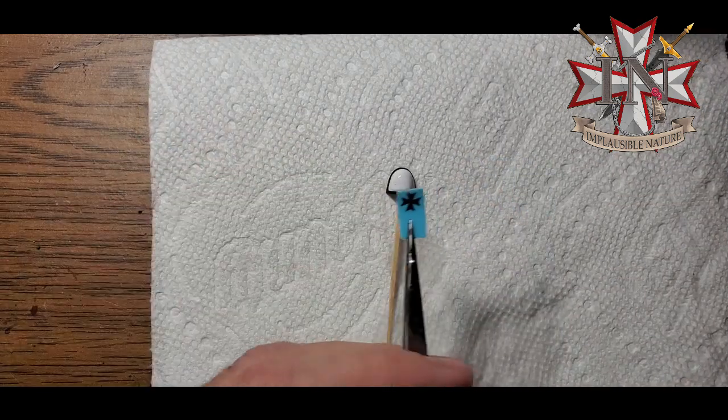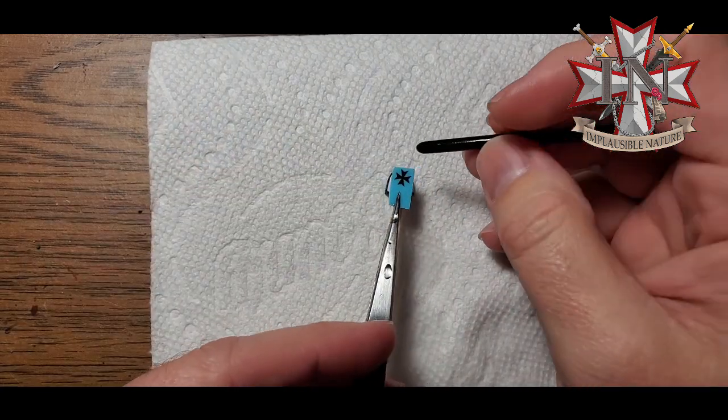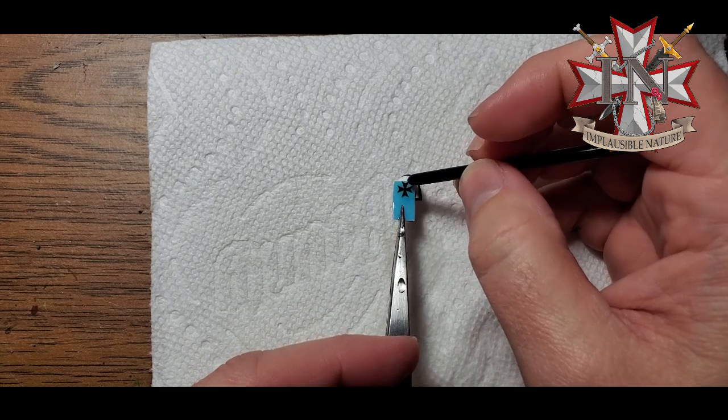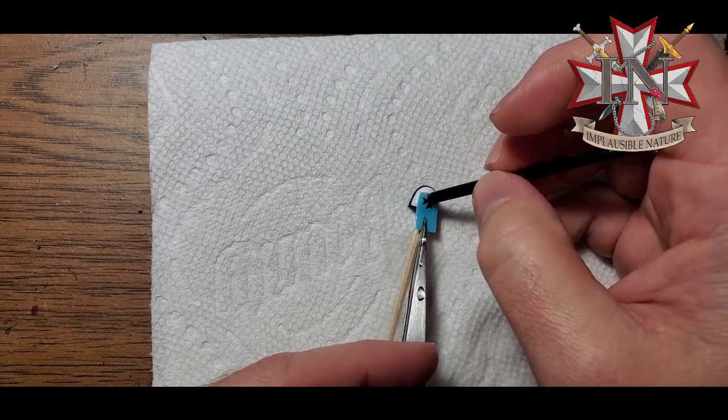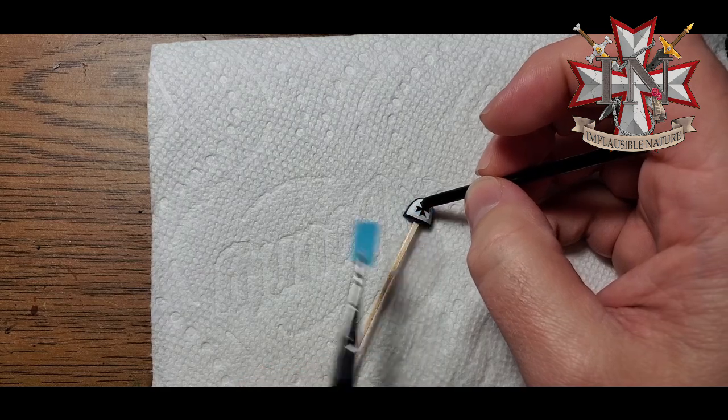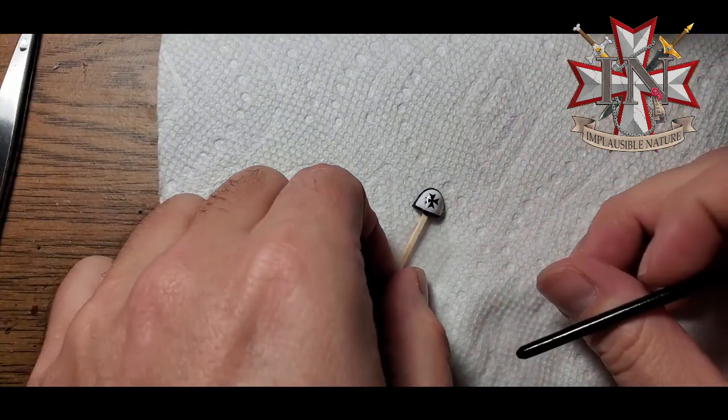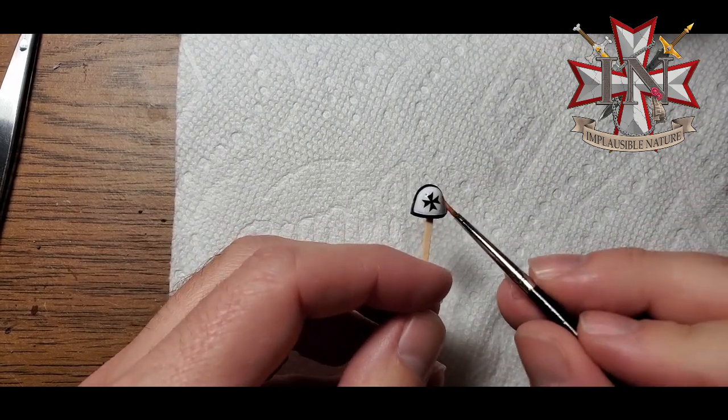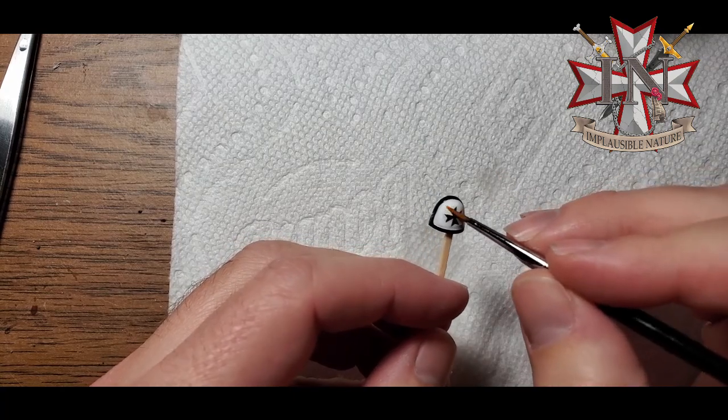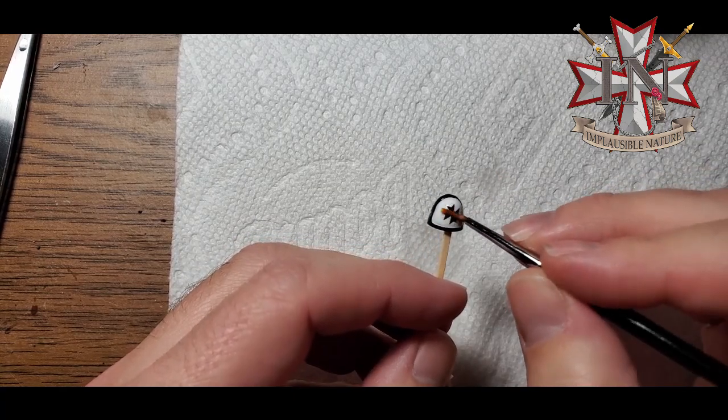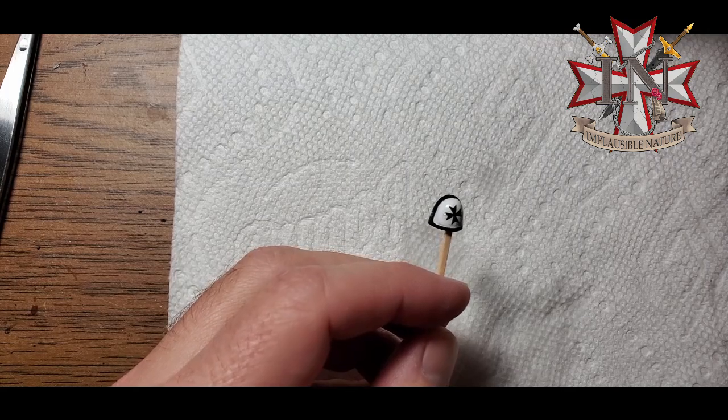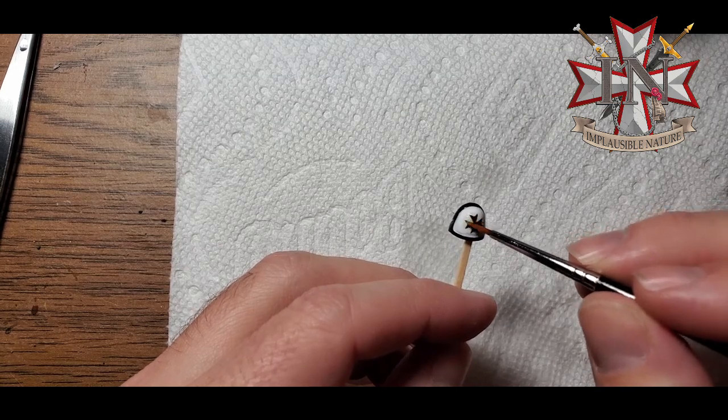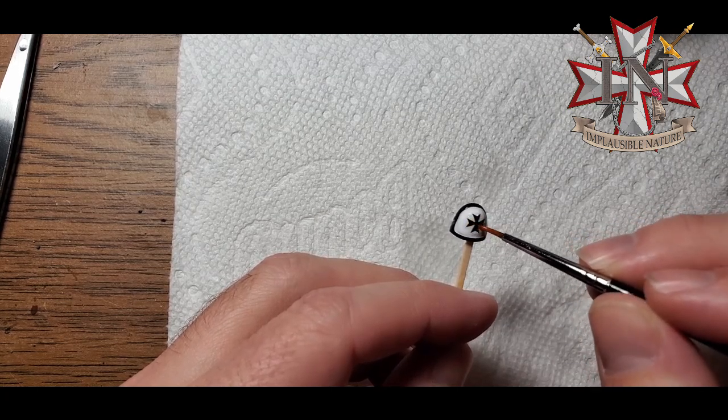So now we're going to take our shoulder pad here and we're just going to hold it about where we want it to go and slide it right off. All right, so obviously it's crooked. That's totally fine. And this is why we put the Microsol on it first a little bit because when it's nice and wet, we may have to get a little bit more here. We'll be able to move it around. And you just gently kind of move it into place.